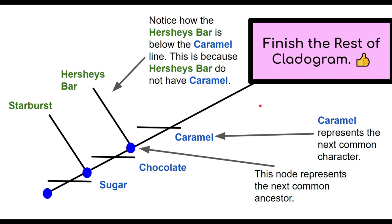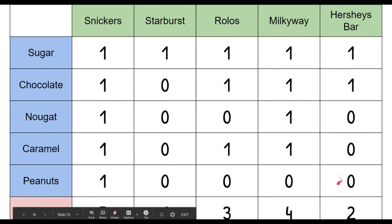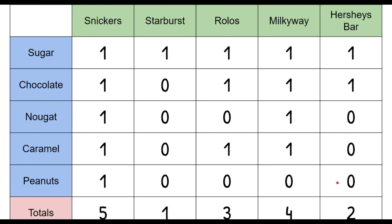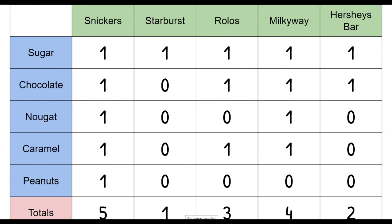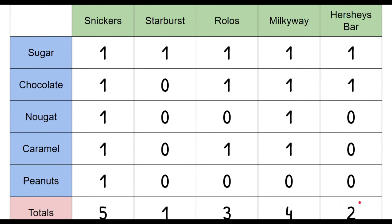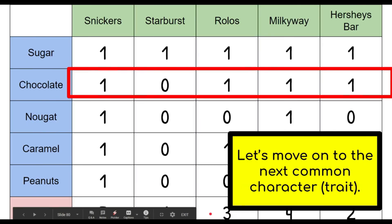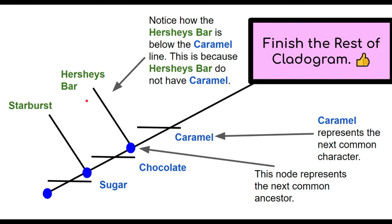I'm not going to finish the rest of the cladogram for you — I have full confidence you'll be able to complete it. One last hint: the totals we calculated tell you placement order. Starburst only has 1 trait so it starts at the bottom of the cladogram; Hershey's has 2 traits so it's above Starburst. Use that logic to place the rest. Please make sure to finish off your cladograms, and I hope you have a wonderful day — whenever you're watching this!